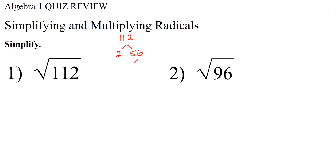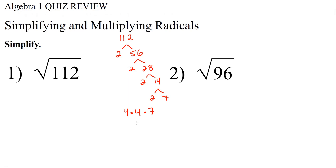56 is also even, and we can break 56 into 2 times 28. 28 is even, so we can break that into 2 times 14. 14 is even, so we can break that into 2 times 7. We can take every pair of the same prime number, and that's going to become part of our perfect square. So we have 2 pairs of 2s: 2 times 2 is 4, and this 2 times 2 is 4. So what we have is 4 times 4 times 7, and 4 times 4 is 16.